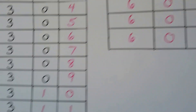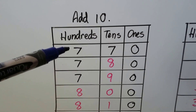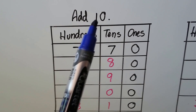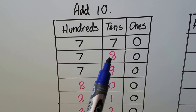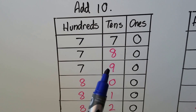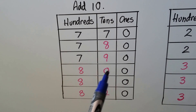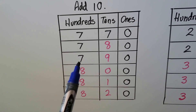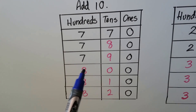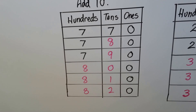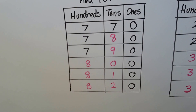Now we're adding ten. Starting at 770, we add a ten: that's a one to the tens place and zero to the ones place, giving 780. Add another ten: 790. Add another ten and it overflows — it regroups into the hundreds place, so hundreds changes to eight and tens goes back to zero. Then we count up again: 810, 820, 830, 840.